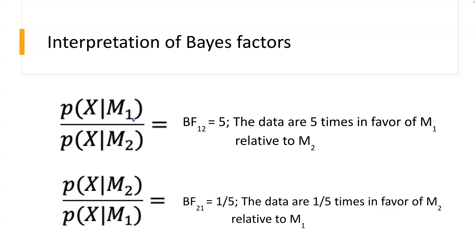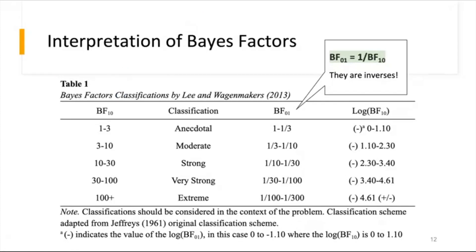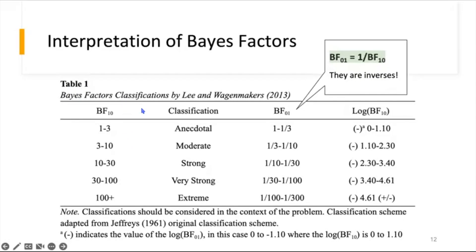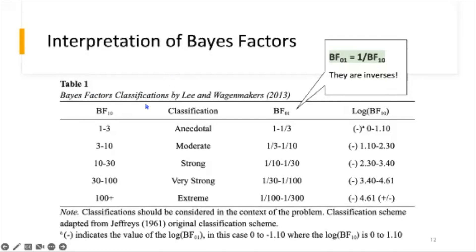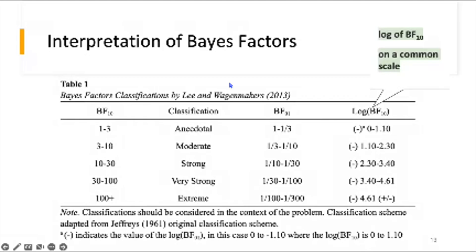People often use zero to refer to the null hypothesis and one to refer to the alternative. The original classification scheme of Bayes factors was developed by Jeffreys (1961), later modified by researchers such as Lee and Wagenmakers. In this scheme, a Bayes factor of one to three is anecdotal evidence; three to ten is moderate; ten to thirty is strong; thirty to one hundred is very strong; and over one hundred is extreme. Since these values are inverses, a B₁₀ of three equals a B₀₁ of one-third. To put them on a common scale, we can take the log of the Bayes factor.